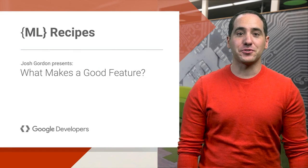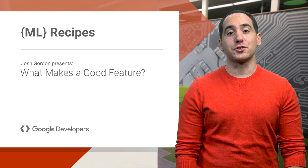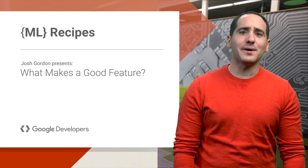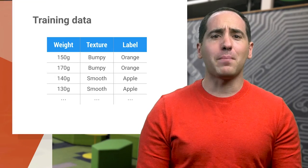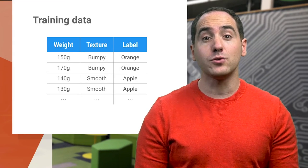Classifiers are only as good as the features you provide. That means coming up with good features is one of your most important jobs in machine learning. But what makes a good feature, and how can you tell? If you're doing binary classification, then a good feature makes it easy to decide between two different things.